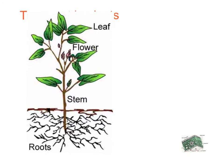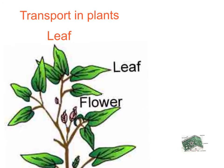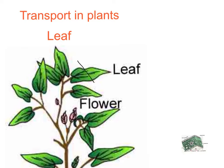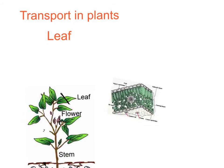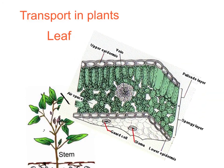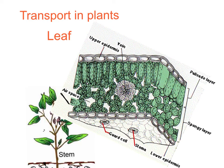Now this is a diagram you're very familiar with. If we slice through a leaf and look down the end, you've seen this picture so many times. You've got your waxy cuticle on the top, your epidermis, the palisade cells where photosynthesis takes place, your spongy cells where air circulates, your lower epidermis, and your stomata.